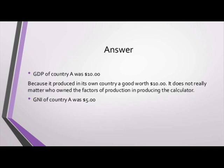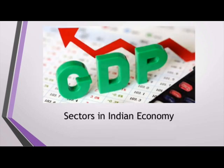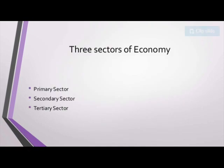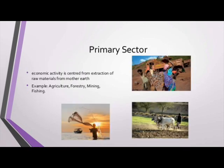The GNI of country A was $5. Now we will see the sectors in the Indian economy. There are three sectors: 1. Primary sector, 2. Secondary sector, 3. Tertiary sector. The primary sector's economic activity is centered around extraction of raw materials from the earth.